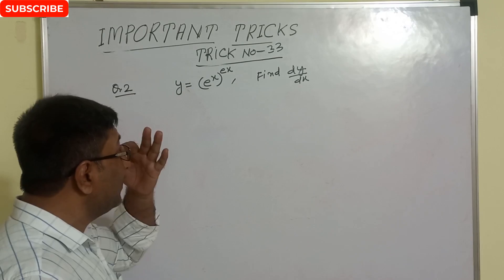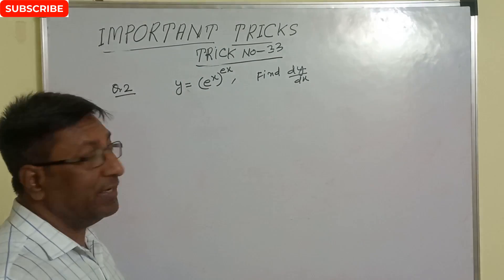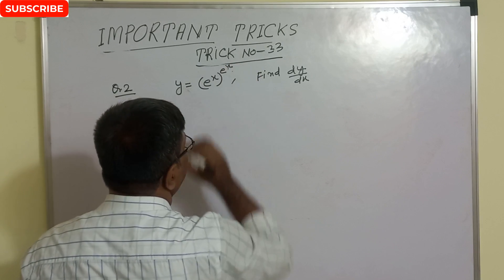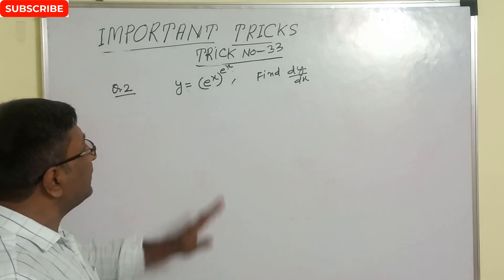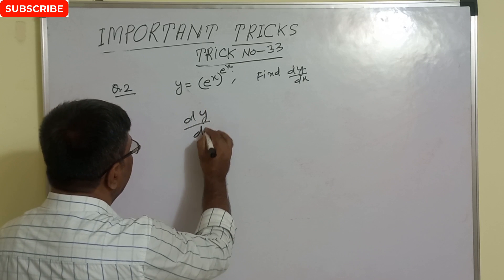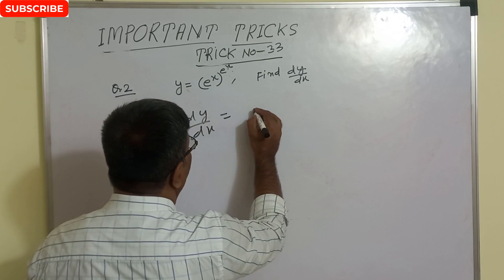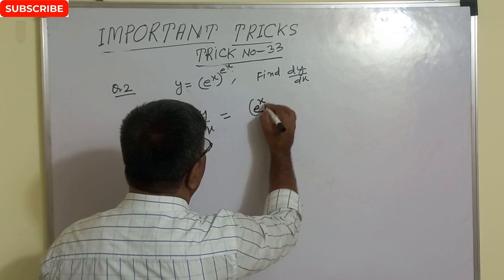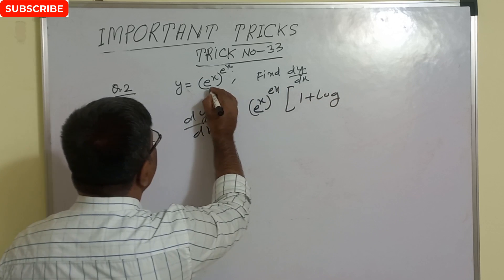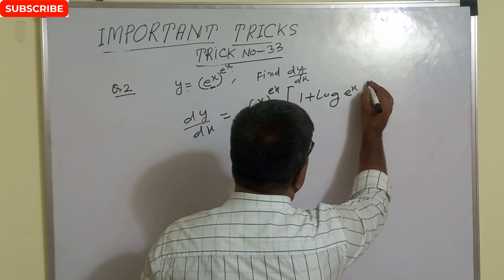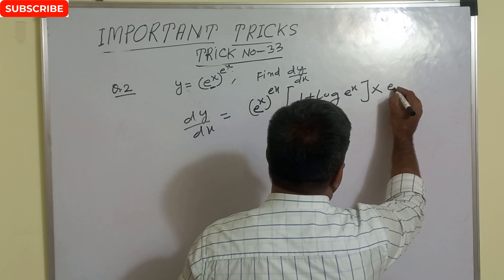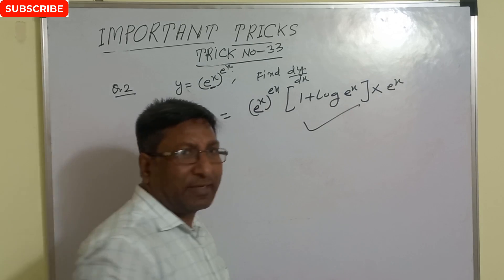y equals (e to the power x) to the power (e to the power x) — find dy/dx. This is also a function to the power of the same function. Simple technique: dy/dx equals the full y function, that is (e^x)^(e^x), multiplied by (1 plus log of the base function e^x), multiplied by the derivative of e^x, which is e^x. This is the correct answer.